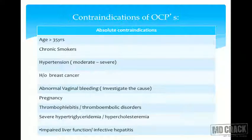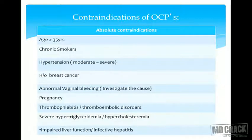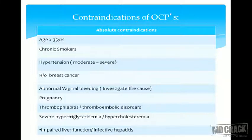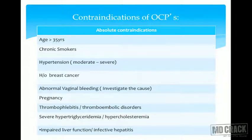Absolute contraindications for OCPs: known or suspected breast cancer or family history; hypertriglyceridemia or hypercholesterolemia; unexplained vaginal bleeding; smokers over the age of 35 years; thrombophlebitis or thromboembolic disorders; pregnancy; moderate to severe hypertension; and impaired liver function or infective hepatitis.